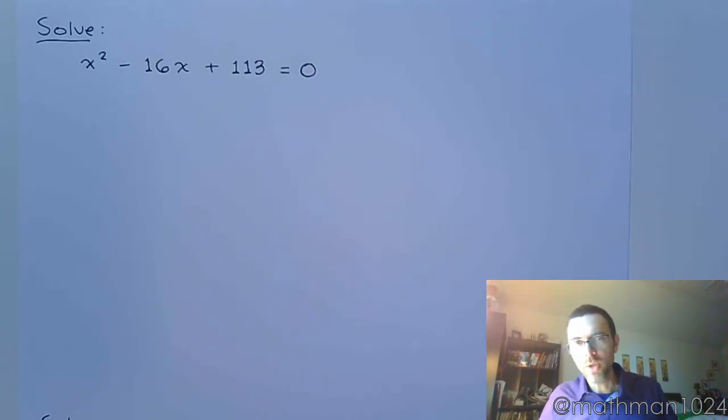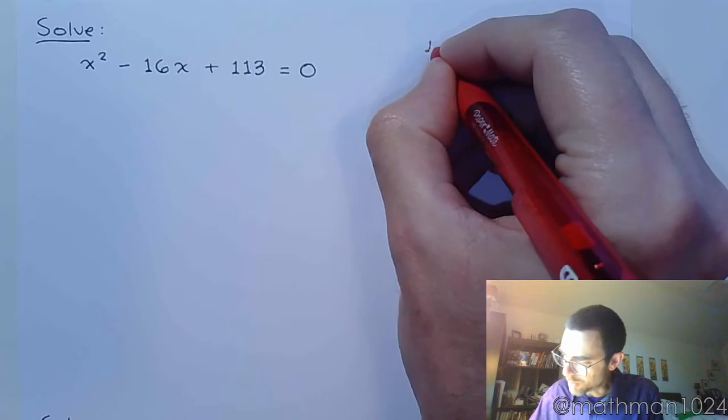All right, we just have a couple more quadratic equations to solve, and we want to make sure that we go through that progression so we know the best way of solving these. So here I see I already have everything on one side of the equation, zeros on the other side.